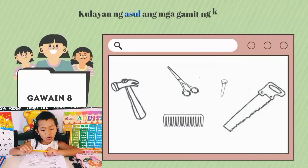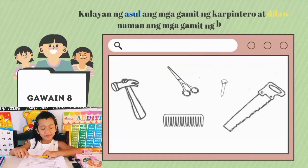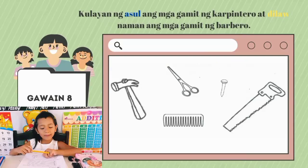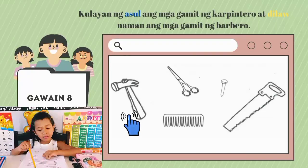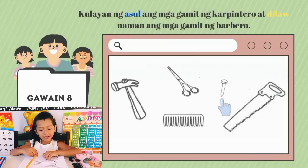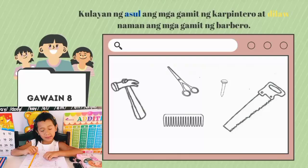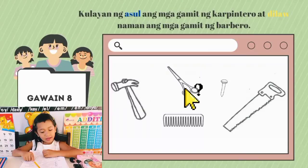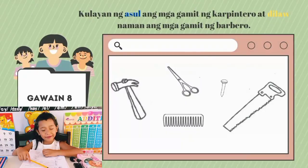Kulay asul ang mga gamit ng karpentero, at dilaw naman ang kulay sa mga gamit ng barbero. Ang kukulayin ko ng asul ay martilyo, pako, at lagari — dahil sila ang gamit ng karpentero. Ang kukulayin ko naman ng dilaw ay gunting at suklay, dahil yan ang gamit ng barbero. Tara, kulayin na tayo!